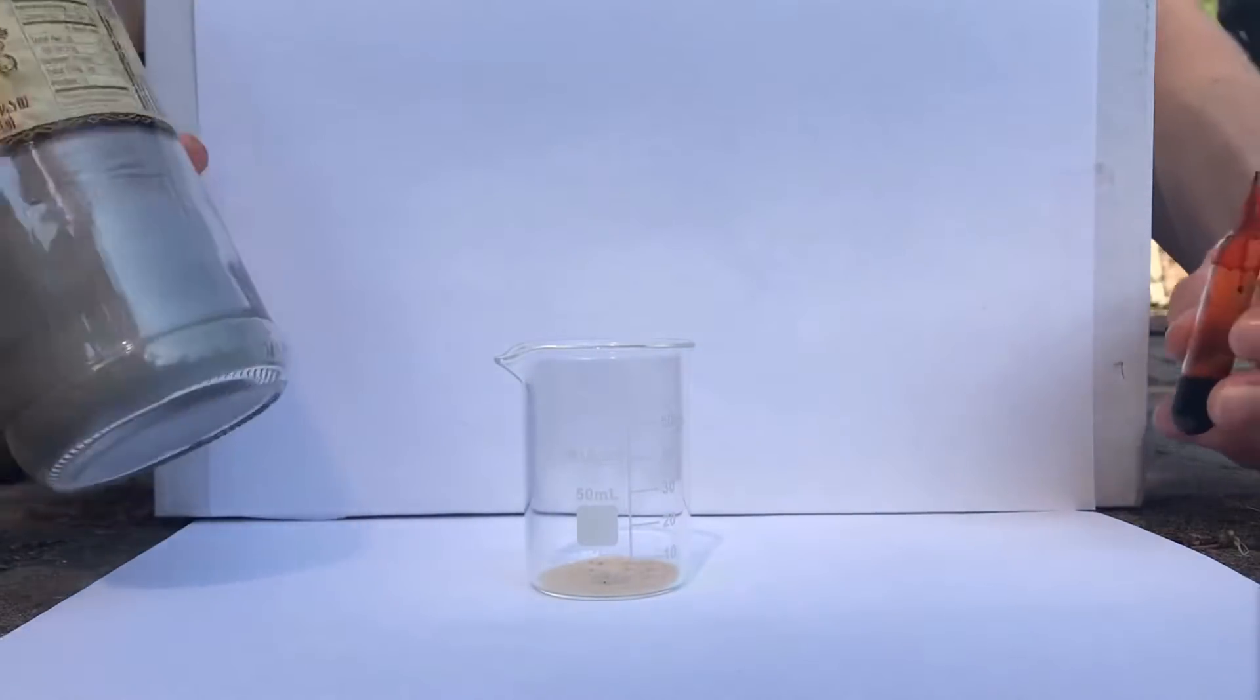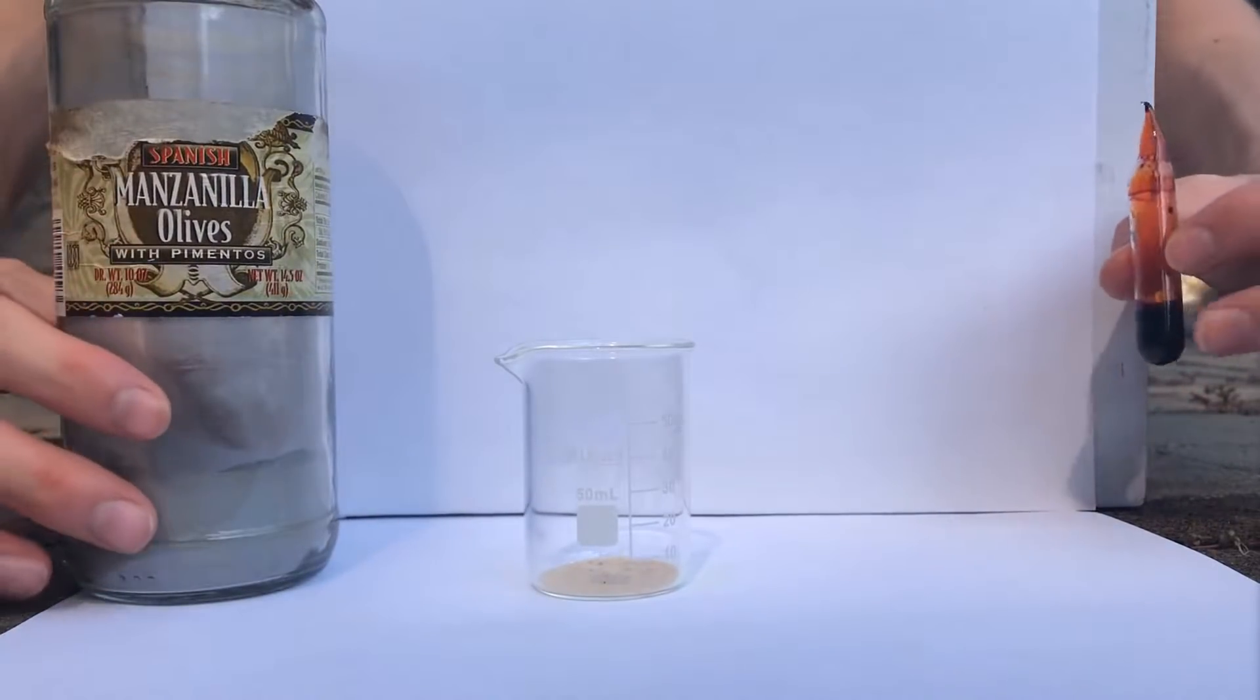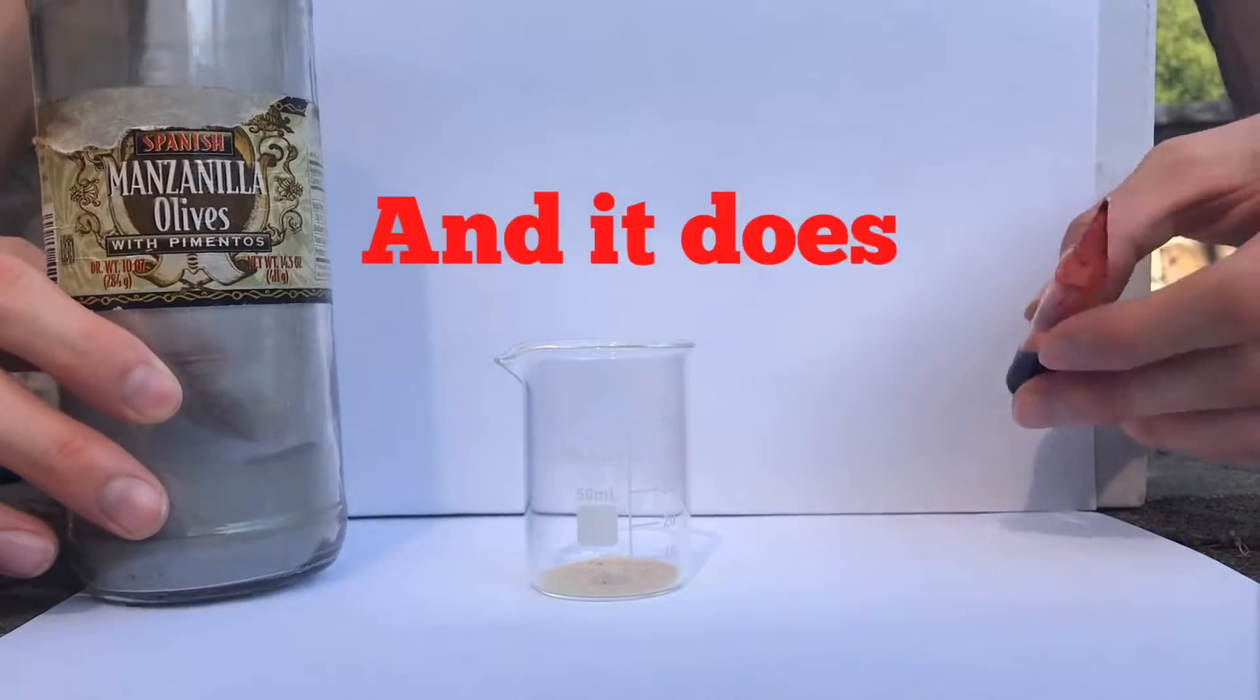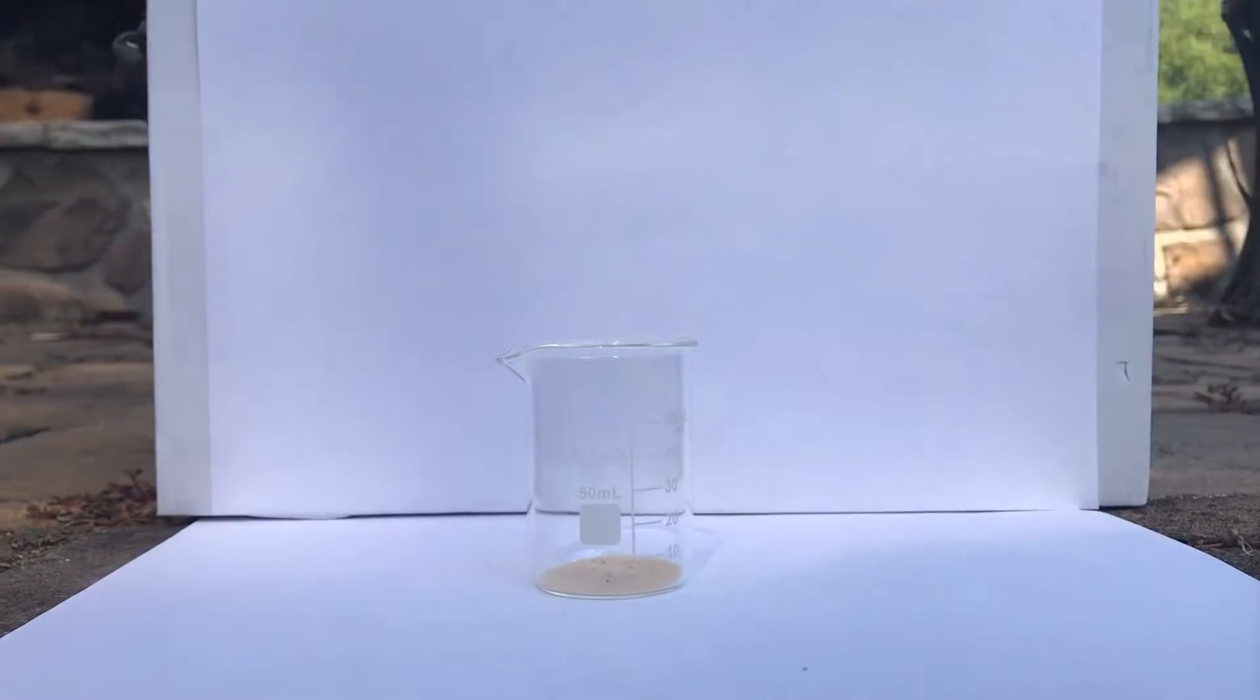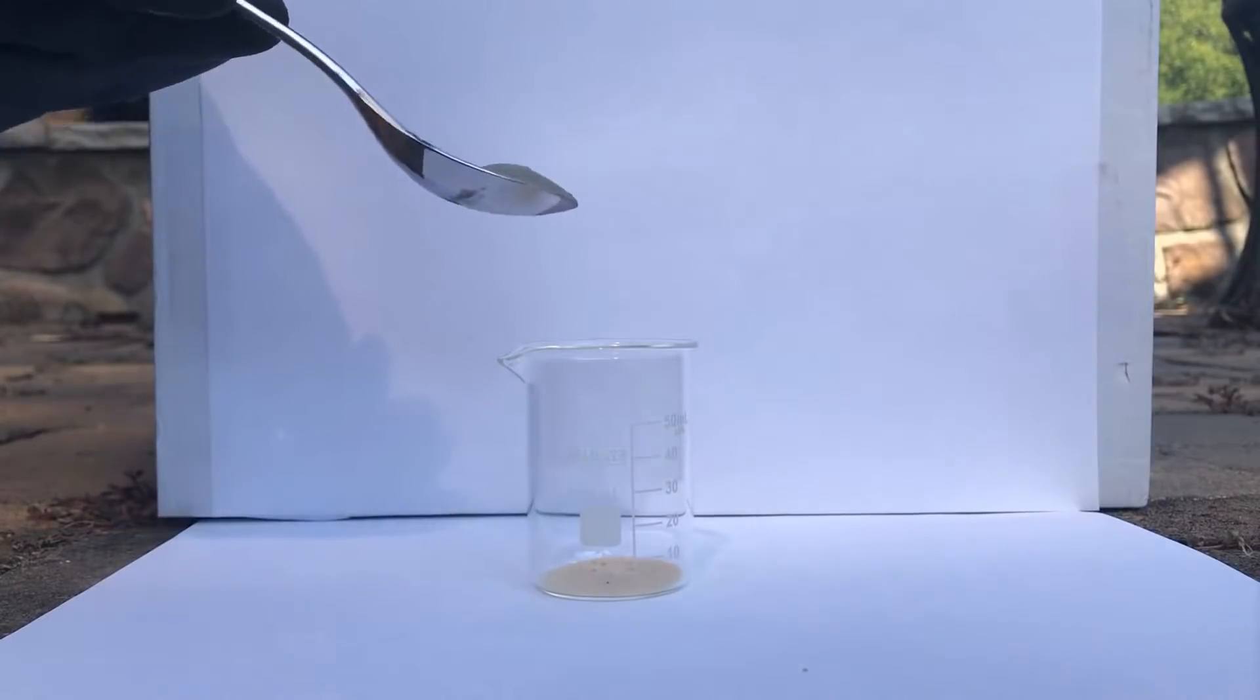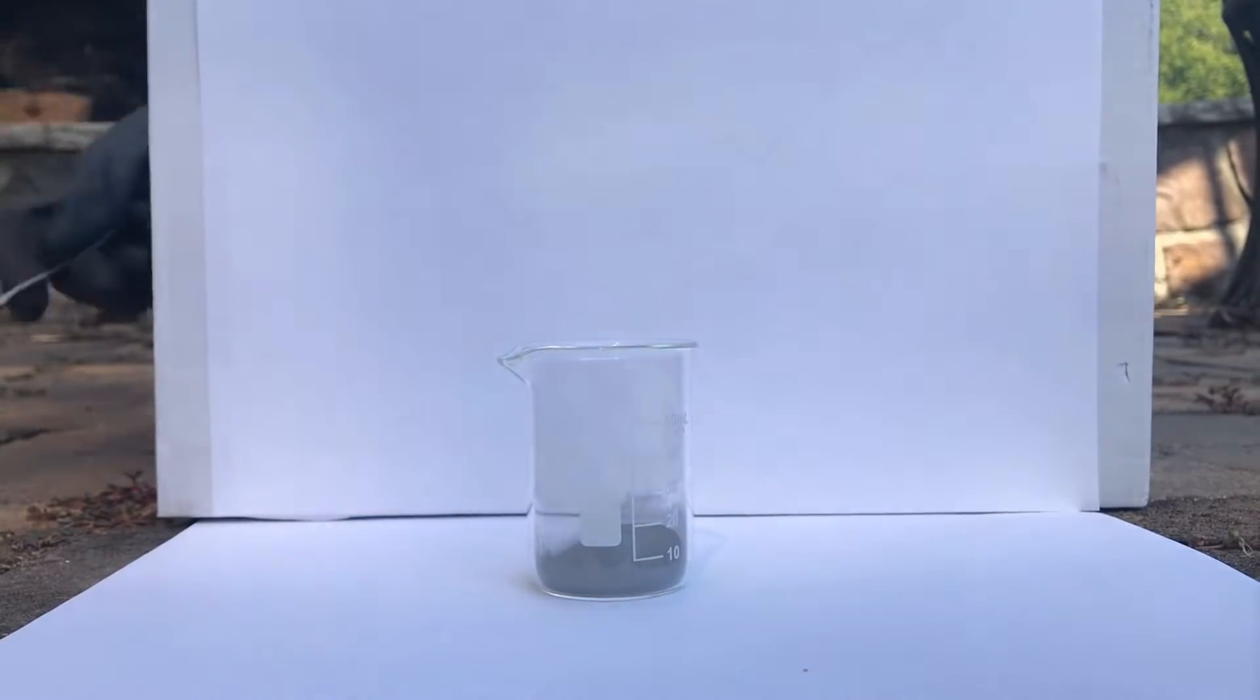Okay so now instead of aluminum foil we're going to do aluminum powder as it has a lot more surface area, it should react very quickly. And bromine obviously first goes in the aluminum. Three, two, one.